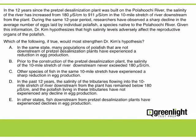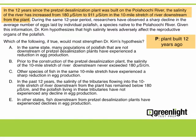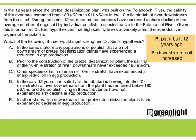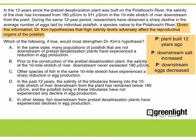Now let's read the argument and summarize the premises and conclusion as we read. The first sentence gives us a premise that the plant was built 12 years ago. Another premise is that the salinity levels have increased. Reading on, we get another premise. Finally, we have the conclusion — it's what the author is trying to convince us of, so we might summarize this conclusion as follows.